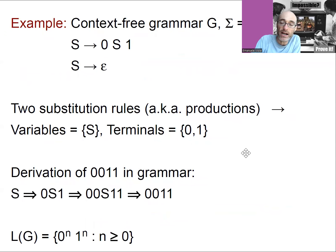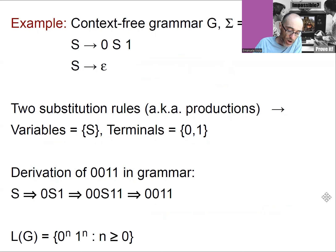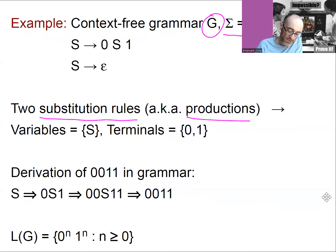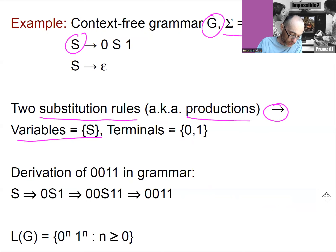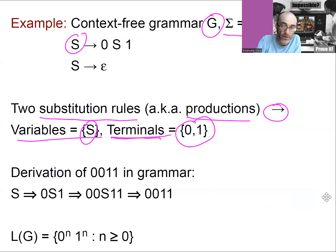Let's see an example — here is a context-free grammar. It's good to start with an example and then move on to the formal definition. So here is a context-free grammar G over the input alphabet sigma = {0, 1}. It has some substitution rules, which are also known as productions, denoted with an arrow. To the left of the arrow you have variables — in this case S is a variable. And to the right you have some combination of variables and what's called terminals, which are just elements from sigma. They are called terminals because you don't apply rules or substitutions to them — they are the terminal end of the derivation.